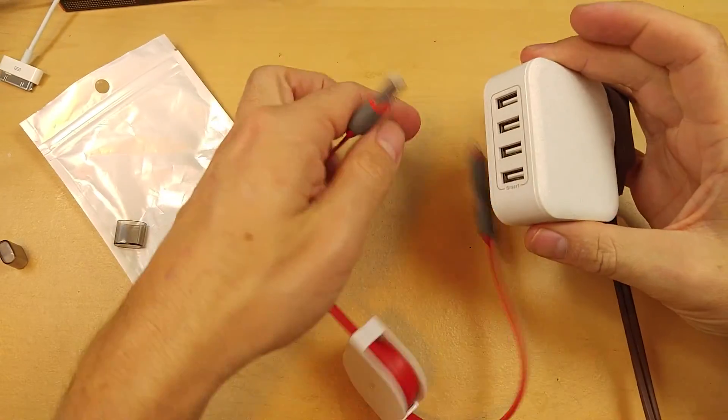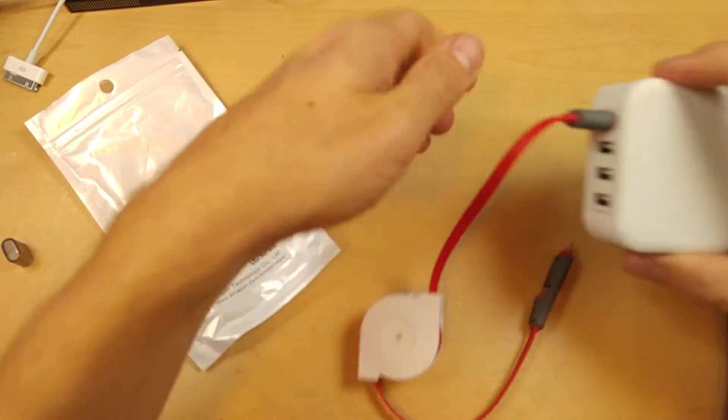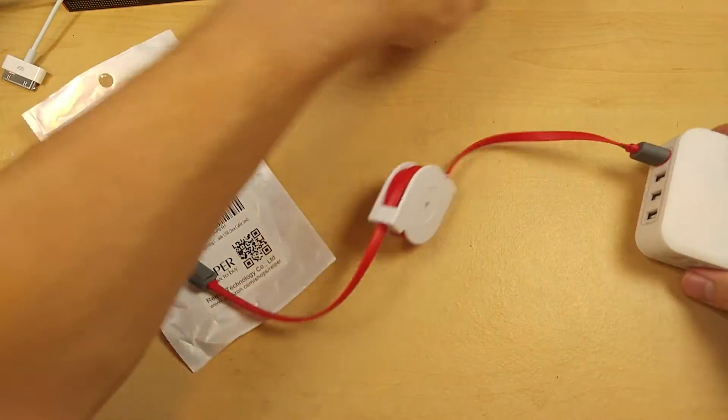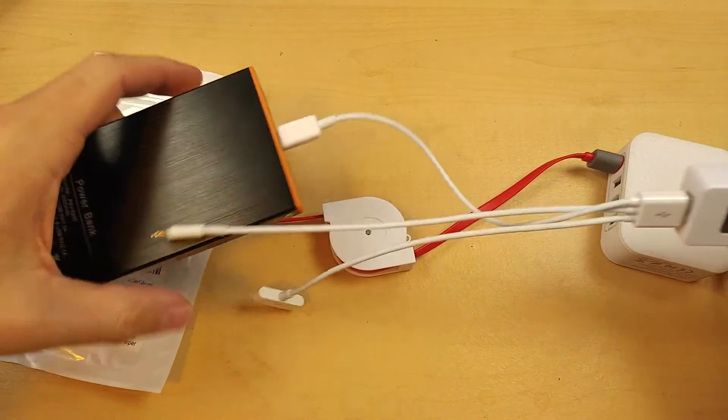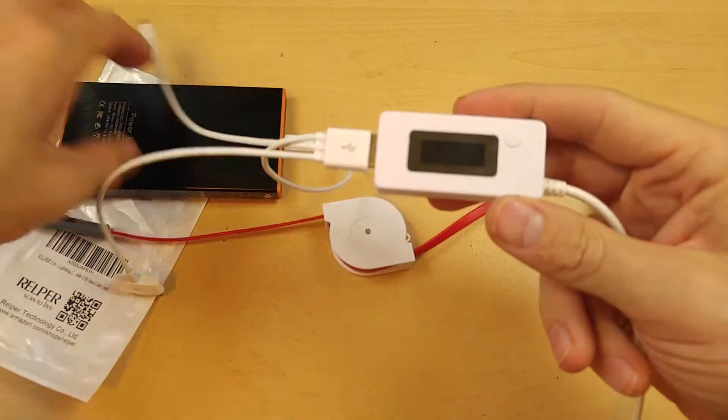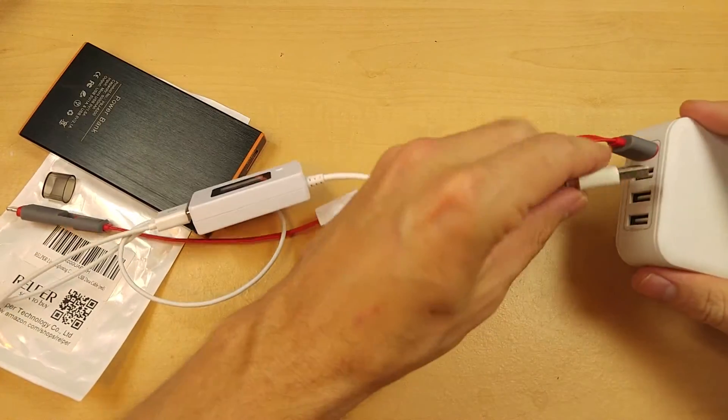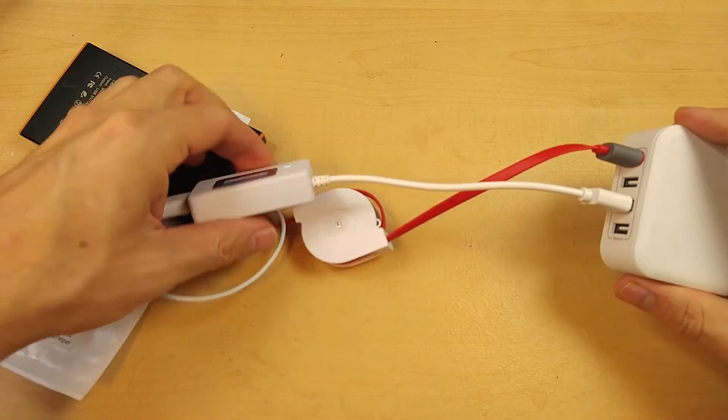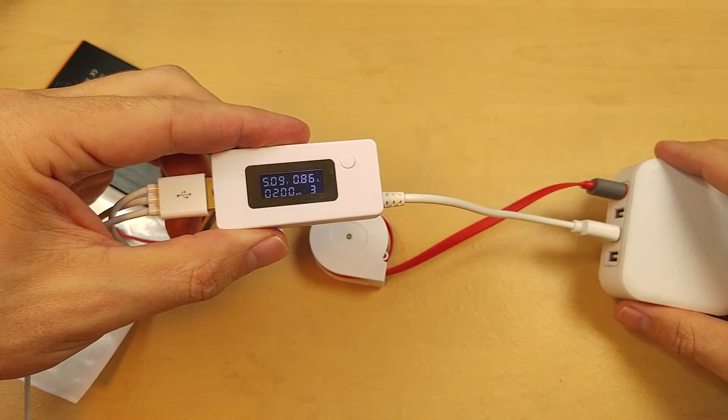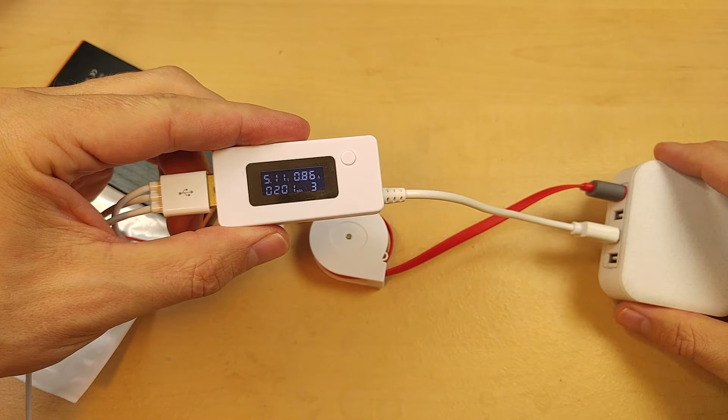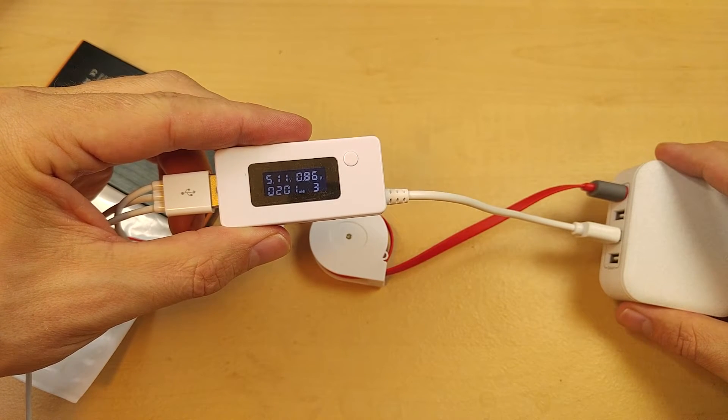I'm going to go ahead and plug it into my high power 4 port charger there. And just to show you, I've got a battery bank that I'm charging with my USB multimeter in line there. I'm going to plug it straight into the charger so you can get a reference voltage. So we're at 5.1 volts and 0.86 amps.